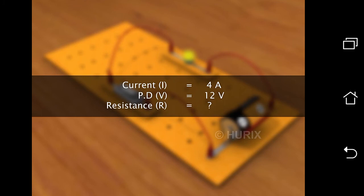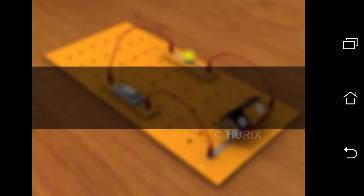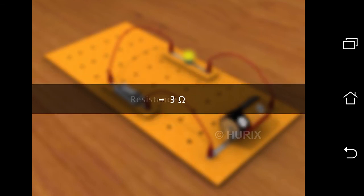By applying the formula for resistance, R equals V divided by I and substituting the values for V and I, we get the resistance of the filament of the bulb as 3 ohms.